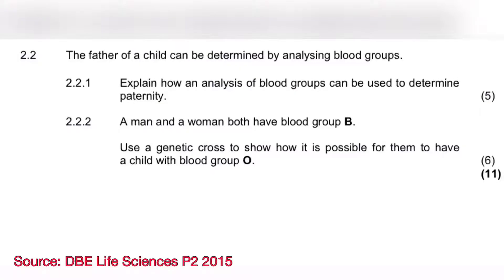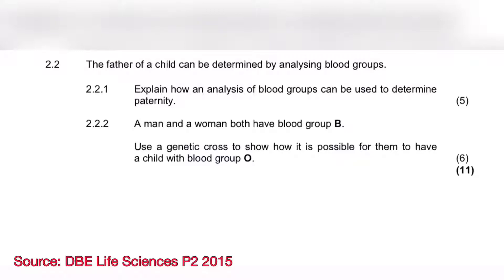We're going to do question 2.2, specifically 2.2.2. I'm skipping 2.2.1 because the answer is in the memo and it's pretty straightforward: the genotype of a potential father, the genotype of the mother, and the genotype of the child are all considered in determining paternity. If the genotype of the father and mother combined doesn't result in the child's genotype, then it's obvious he's not the father.